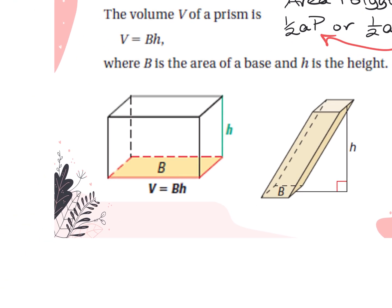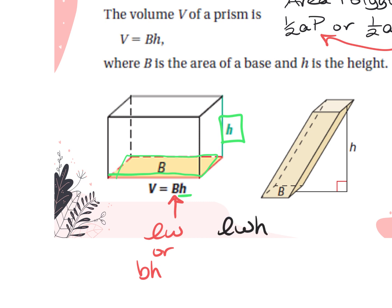In this particular picture on the left, the base shape is a rectangle, so capital B is the formula for area of a rectangle. You can either memorize it as length times width or base times height — just don't get confused because we have the height of the prism, and then you would also have the height of the base shape. So you can memorize it as length times width times height, or base times height times height, but just know that the second height is the height of the prism.